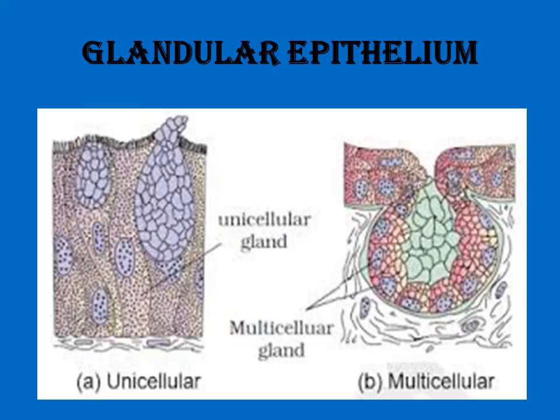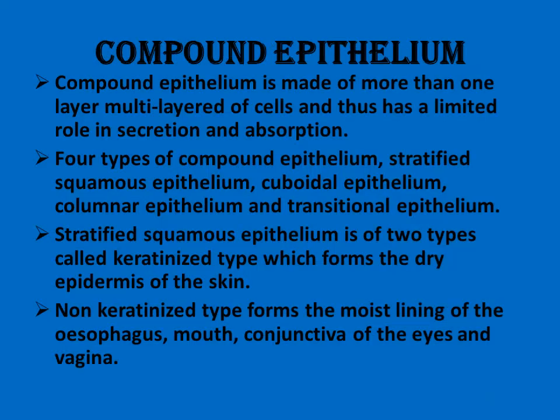Compound epithelium is made of more than one layer of cells — it is multi-layered. It has a limited role in secretion and absorption. There are four types of compound epithelium: stratified squamous, cuboidal, columnar, and transitional epithelium.